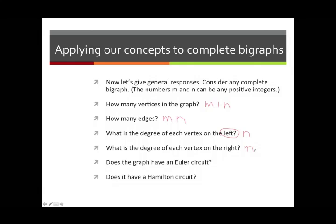As for a Hamilton circuit, we've seen that in this type of graph, any Hamilton circuit forces you to alternate between left and right vertices. So the graph has a Hamilton circuit if and only if m is equal to n; otherwise it doesn't.